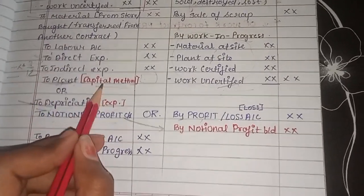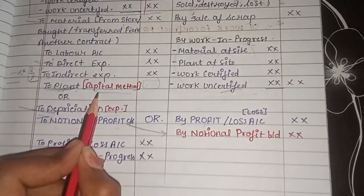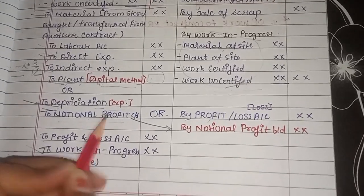And there are two methods: capital and expense method. Capital method is used to solve, otherwise depreciation method for the one year contract.